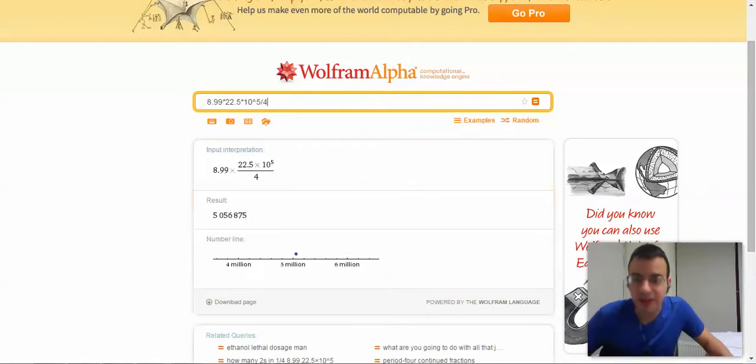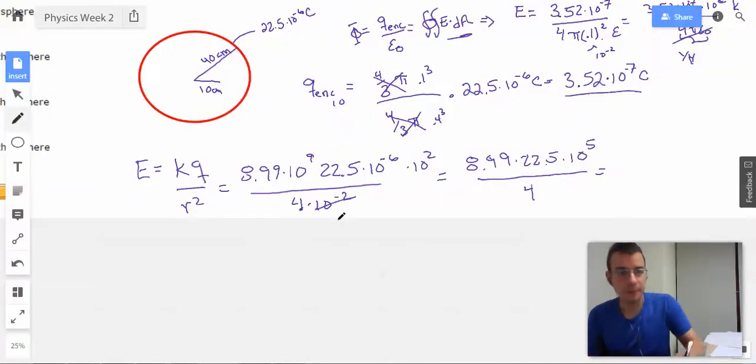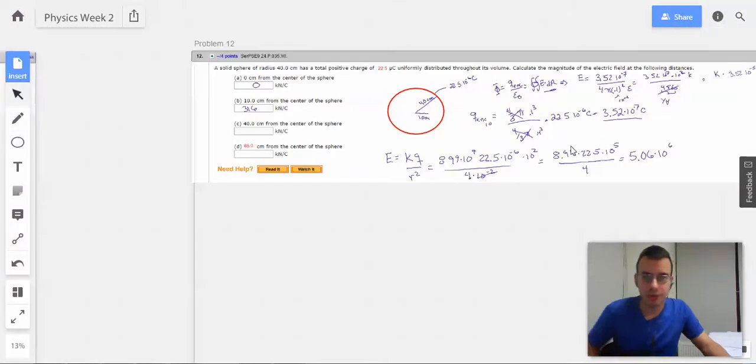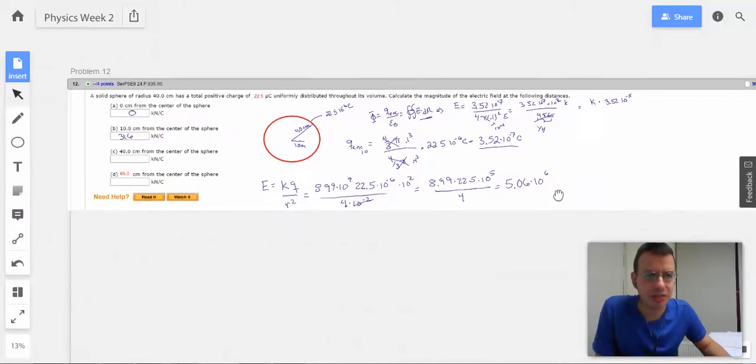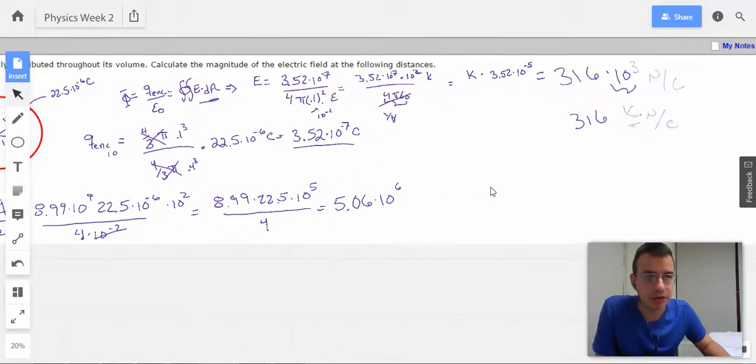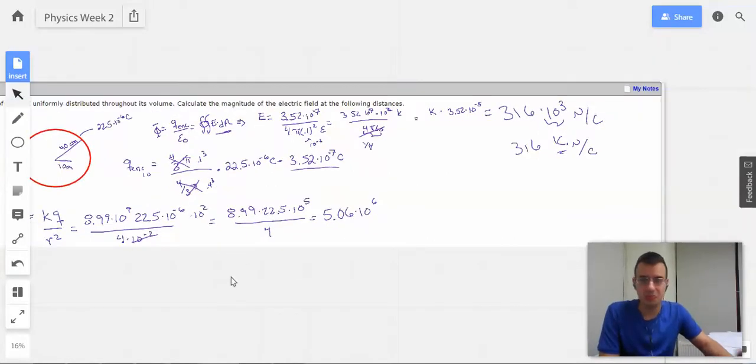8.99 times 22.5 times 10 to the 5th divided by 4. And we'll check that over and make sure it looks right. 8.99 times 22.5 divided by 4. And it gives us 5.056. 5.06 times 10 to the 6th. That's quite a bit bigger than the previous. No, it's not. That's about right. So we had 3.16 times 10 to the 5th. So this is like 10 times bigger, which seems reasonable.